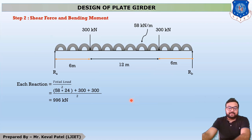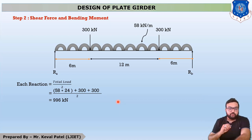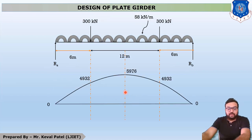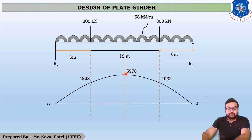After that, we found the maximum bending moment. As per your semester 3 subject, Mechanics of Solids, the maximum bending moment is generated at the point of contraflexure — where the shear force equals zero, the bending moment is maximum. In the last lecture, we found the maximum bending moment at the center of span, which is equal to 5976 kN·m.